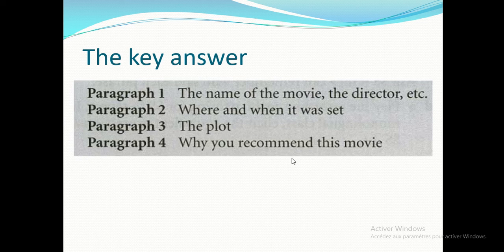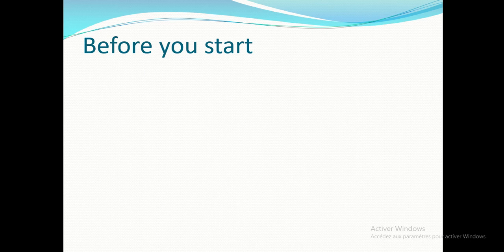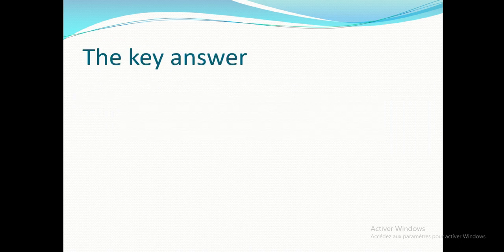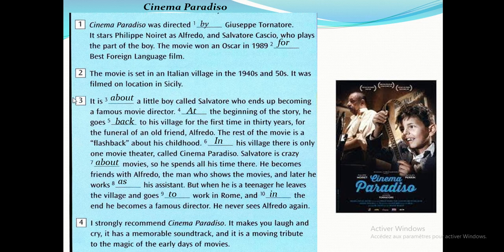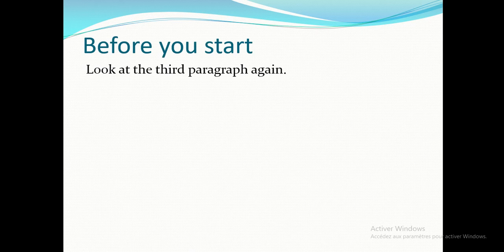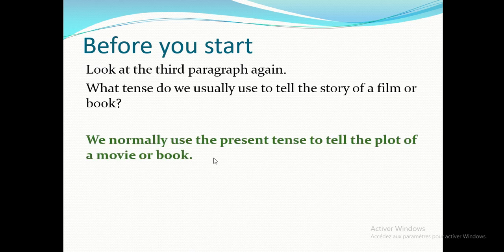Now let's move to Task 3. Look at paragraph three again — what tense do we usually use to tell the story of a film or book? Focus on the verbs in paragraph three, from 'It is about a little boy called Salvatore' to 'he never sees Alfredo again.' Try to find out the tense used most. Pause the video to think.